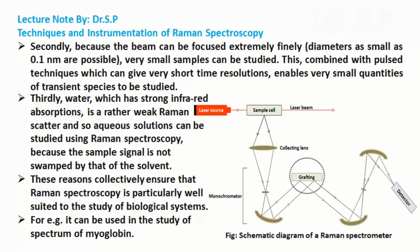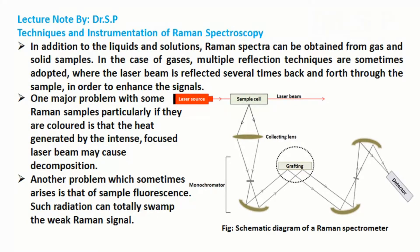For example, it can be used in the study of the spectrum of myoglobin. In addition to liquids and solutions, Raman spectra can be obtained from gas and solid samples. In the case of gases, multiple reflection techniques are sometimes adopted, where the laser beam is reflected several times back and forth through the sample in order to enhance the signals.